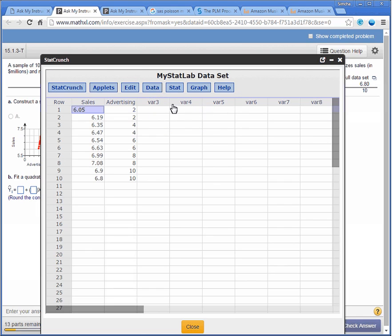We have two variables, which is what's given to us. But we're going to take that third variable and call it advertising squared, and literally square it. Now there may be a way of doing this through the StatCrunch, but I'm going to do it manually.